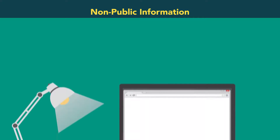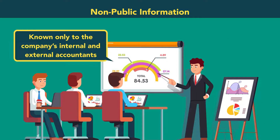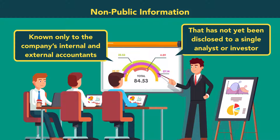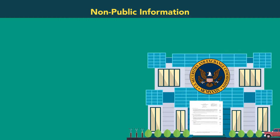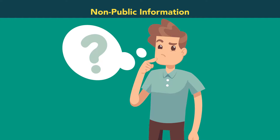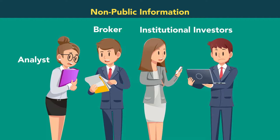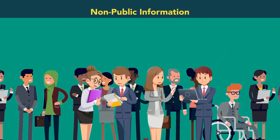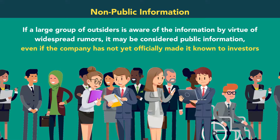Non-public information. Non-public information is unavailable through publicly accessible sources. For example, an anticipated earnings release known only to the company's internal and external accountants that has not yet been disclosed to a single analyst or investor is clearly non-public. By contrast, an earnings release published in a Form 10-Q filed publicly with the SEC and posted on the company's website is clearly public. Sometimes whether information is public or non-public is unclear. If only a very limited group of outsiders — such as analysts, brokers, or institutional investors — is aware of the information, it may be considered non-public. As the audience grows, it loses some of its confidentiality. If a large group of outsiders is aware of the information by virtue of widespread rumors, it may be considered public information even if the company has not yet officially made it known to investors.